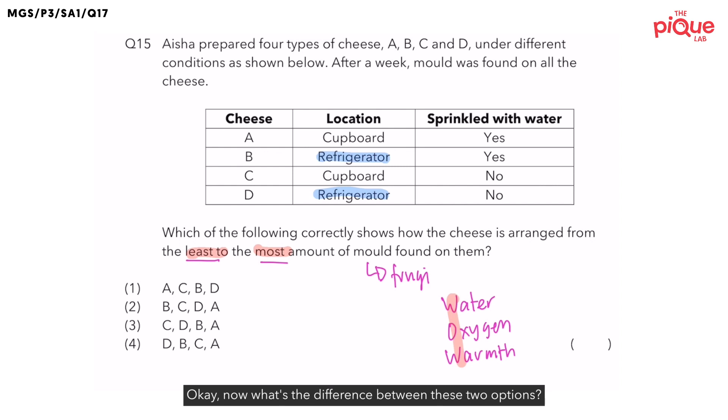Now what's the difference between these two options? Option B is sprinkled with water. Option D is not sprinkled with water. So which one do we choose? Remember, one of the conditions that needs to be met before mold can grow is the presence of water. So if I want the cheese to have the least mold, should the cheese be sprinkled with water? No. And hence, cheese D will have the least mold.